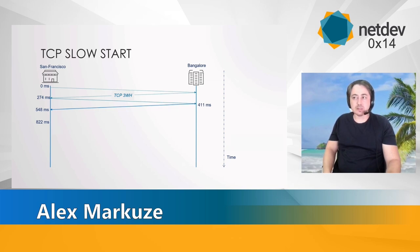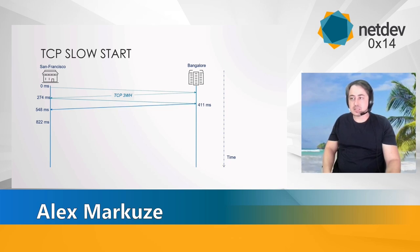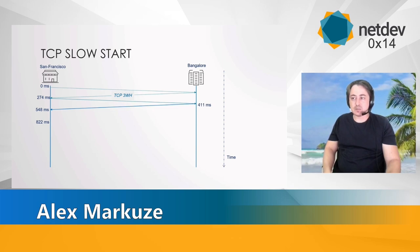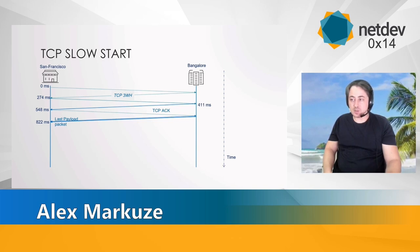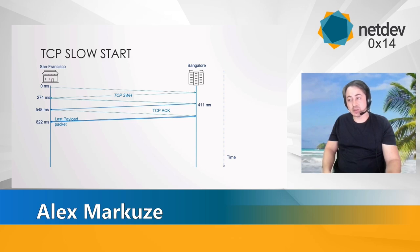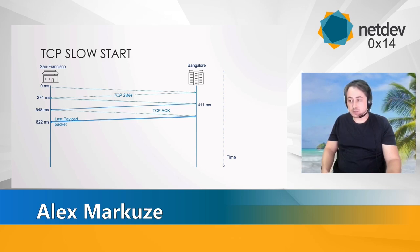This timid behavior really impacts download time, and with large distances, the effect compounds. In this example, the payload is three times the size of the initial send window, and the ACK from the client must travel all the way back to Bangalore before the rest of the payload is sent. So in our example, it would take almost a second to get all three packets of the response to arrive.